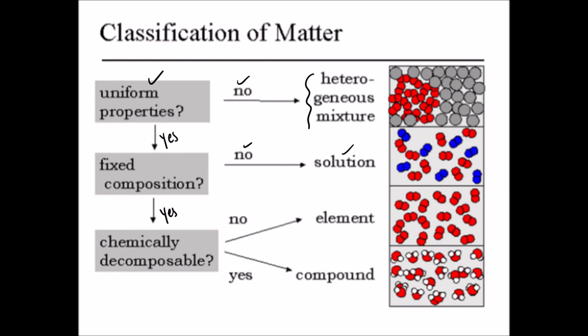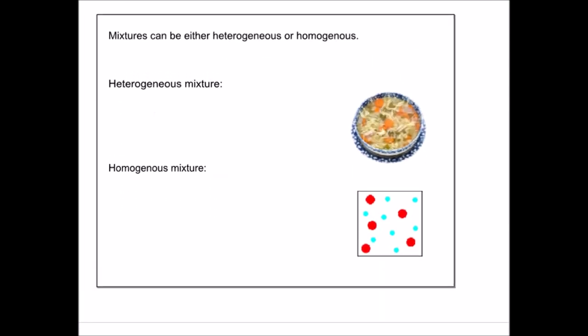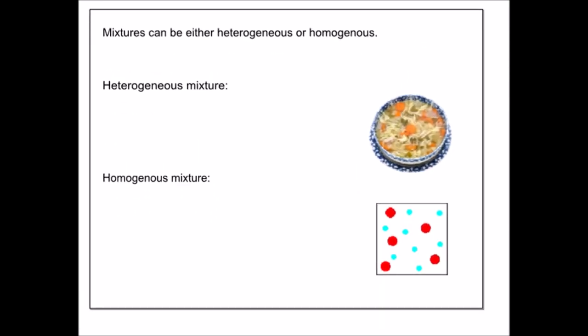If the answer is yes, that there is a fixed composition, we're talking about an element or a compound, which will not be the focus of this video, but it's still important, because elements and compounds are what make up these heterogeneous and homogenous solutions. Mixtures can either be heterogeneous or they can be homogenous. A heterogeneous mixture is unevenly mixed, and it tends to have large particles. Also, you might hear heterogeneous mixtures referred to as suspensions, and that's because those large particles might be suspended in whatever it is that they're mixed with.